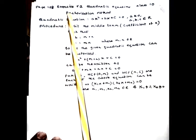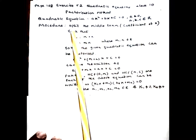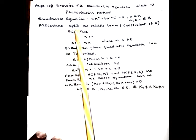Page number 108, Exercise 5.2: Quadratic Equations, Class 10, Factorization Method. If the given quadratic equation is of the form ax² + bx + c where a is not equal to 0 and a, b, c are real numbers, then the procedure to find the roots by factorization method is by splitting the middle term. The middle term is the x coefficient bx.